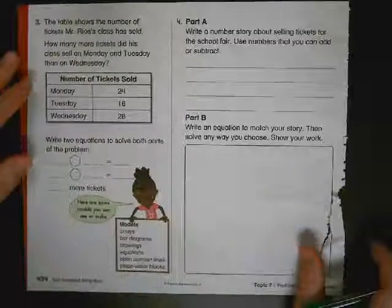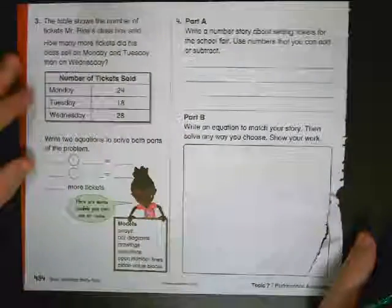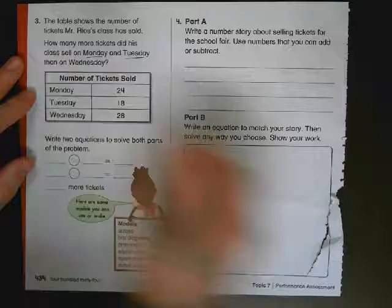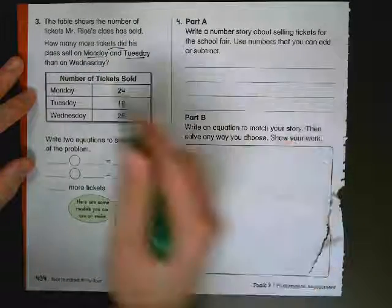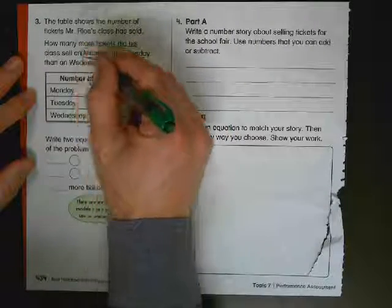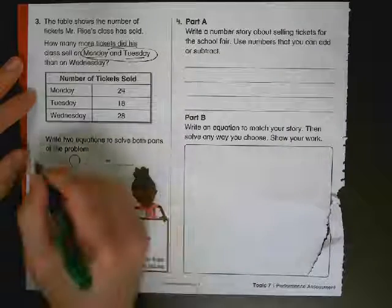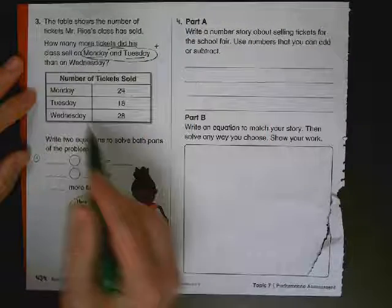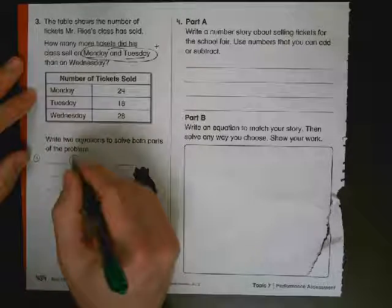On the back, number three, the table shows the number of tickets Mr. Rios' class has sold. How many more tickets did his class sell on Monday and Tuesday than on Wednesday? Oh boy. Monday, Tuesday than on Wednesday. So it says Monday and Tuesday. That means we're going to combine these two for our first step. We're going to add them. Right? Monday and Tuesday, 24 plus 18. That's your first step, you're going to add.